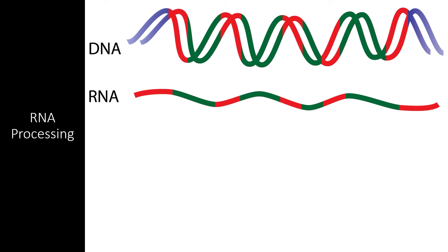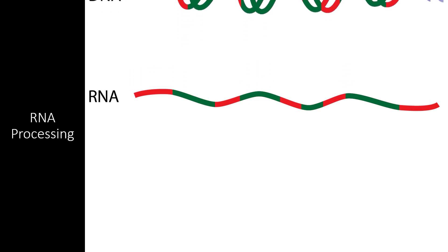Since these introns contain non-coding DNA, leaving them in the mRNA molecule would create a nonsensical protein. Therefore, they must be removed for the process of splicing.